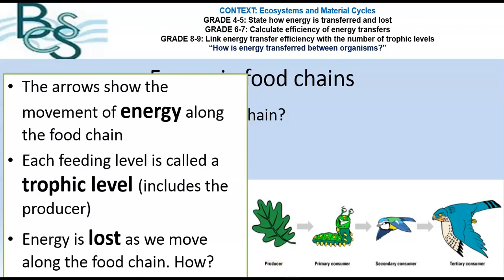And that glucose is then turned into the biomass of the organism. So we're talking about leaves, proteins, muscles, bones, etc. That's the biomass of the organism. The other thing we mentioned last time was the fact that each stage in our food chain is referred to as a trophic level.